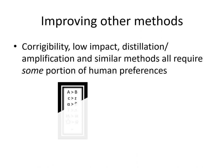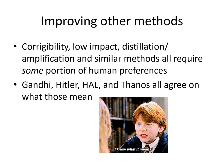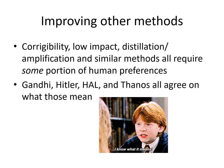Finally, there are a bunch of other methods like corrigibility — the ability to modify the AI's goals safely — low impact, distillation amplification, and similar methods. They all require some portion of human preferences and cannot be done in a fully value-agnostic way. However, as I like to say, Gandhi, Hitler, Hal, and Thanos all agree on what those terms mean — they would all agree on what a corrigible AI is or what a low-impact AI is. So we don't have to fully define a human utility function — just some pieces of it — in order to apply it to these methods. Thank you for listening. For more details, look at the Occam's razor paper on the archive and my research agenda on LessWrong. Links will be provided in the YouTube commentary box.